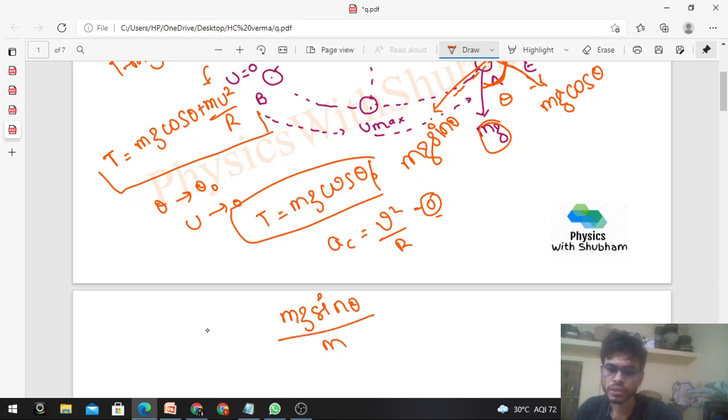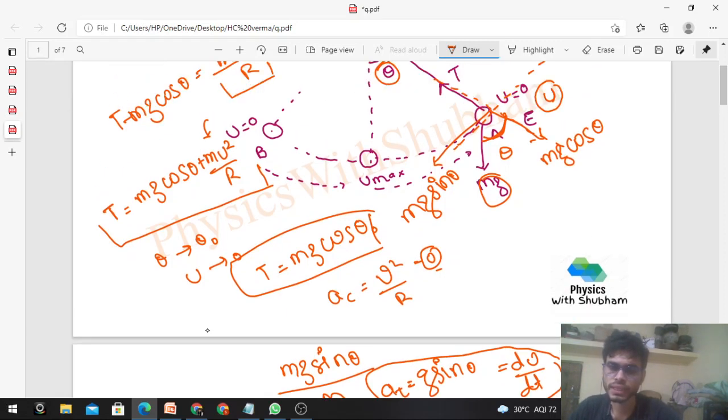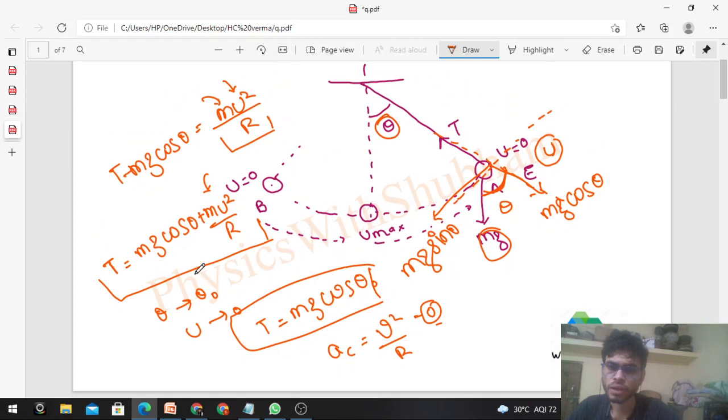You can find out tangential acceleration. Tangential force, net tangential force mg sin theta in the tangential direction upon mass. So this is the value of tangential acceleration, and you can find out du/dt, the rate of change of speed. And tangential acceleration is maximum at the extreme position.